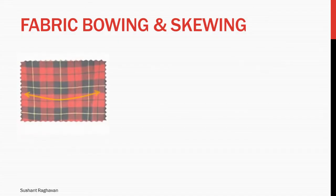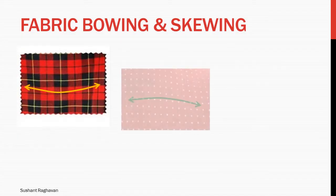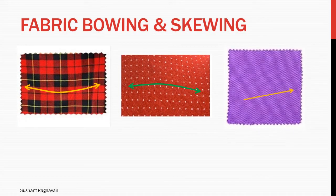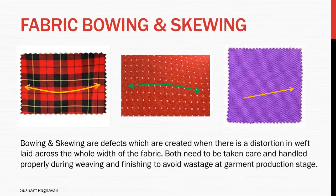Fabric bowing and skewing. Bowing and skewing are defects which are created when there is a distortion in weft laid across the whole width of the fabric. Both need to be taken care of and handled properly during weaving and finishing to avoid wastage at the garment production stage.